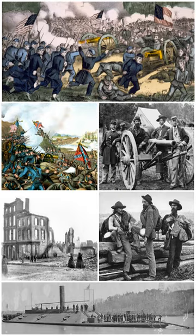At the start of the Civil War, a system of paroles operated. Captives agreed not to fight until they were officially exchanged. Meanwhile, they were held in camps run by their own army where they were paid but not allowed to perform any military duties. The system of exchanges collapsed in 1863 when the Confederacy refused to exchange black prisoners. After that, about 56,000 of the 409,000 POWs died in prisons during the war, accounting for nearly 10% of the conflict's fatalities.